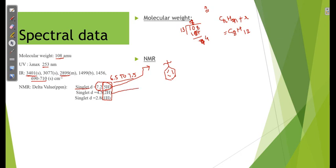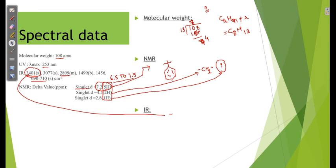In IR, we have 3401 and a strong signal. It indicates that the chances of OH or NH2. But in NMR it shows that it is 1H. So always, or most probably, chances of OH. This also confirms that aromatic compound is there because 690 and 710 is bending signal of aromatic.